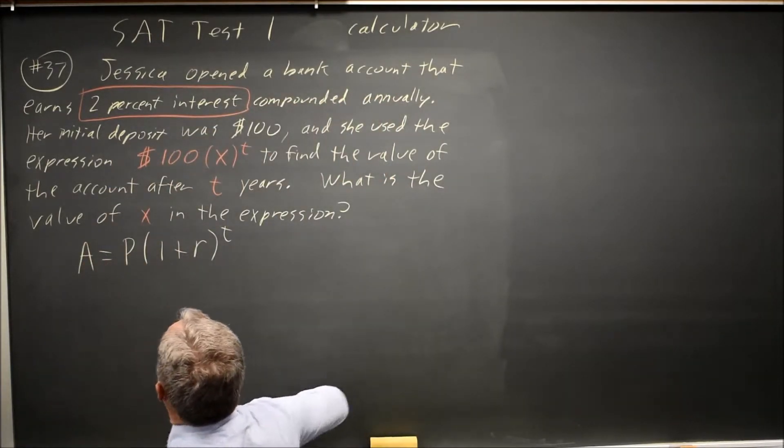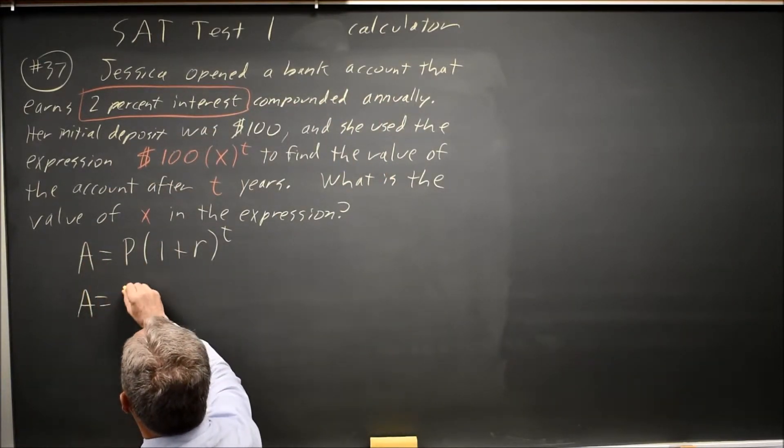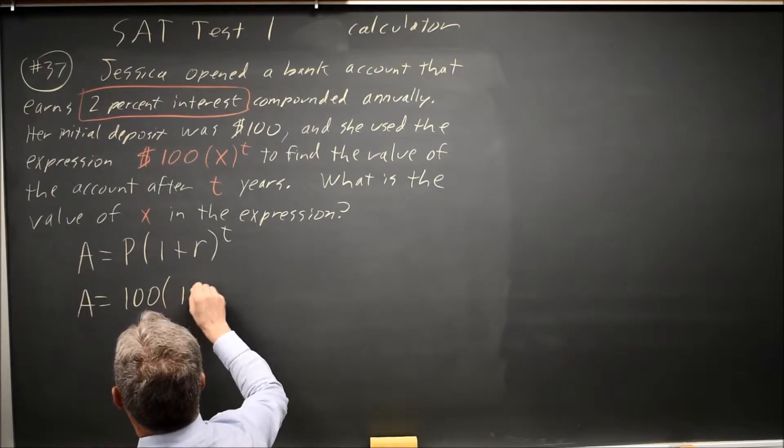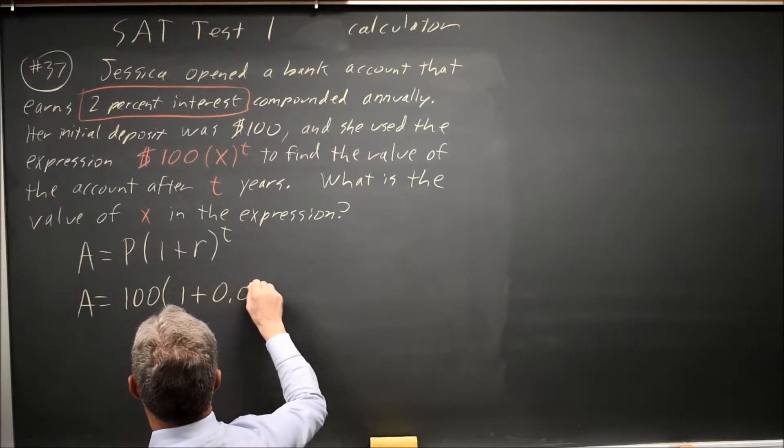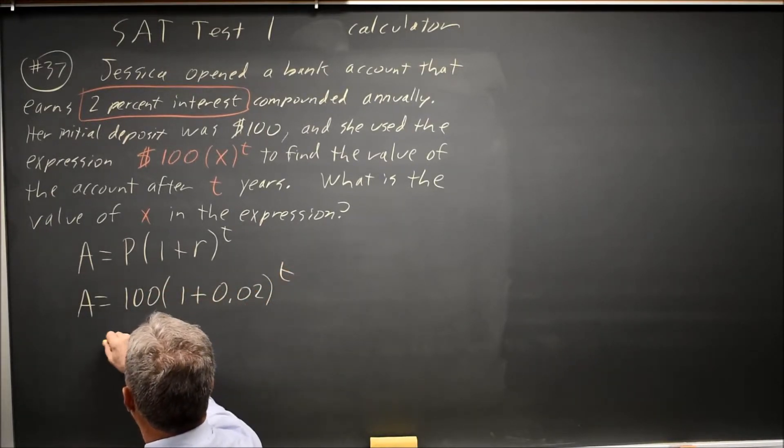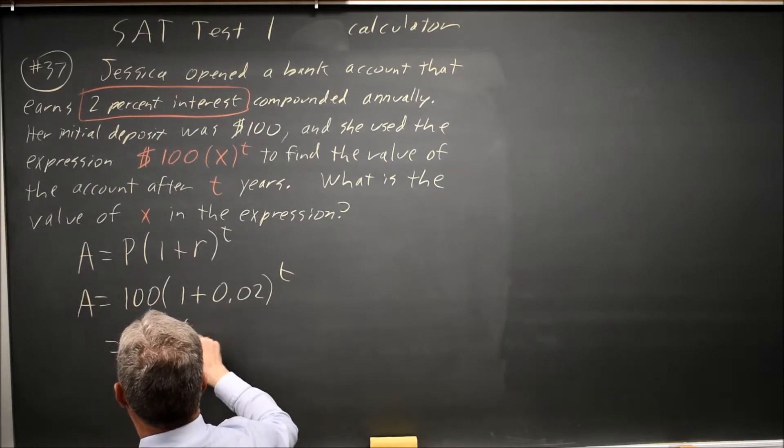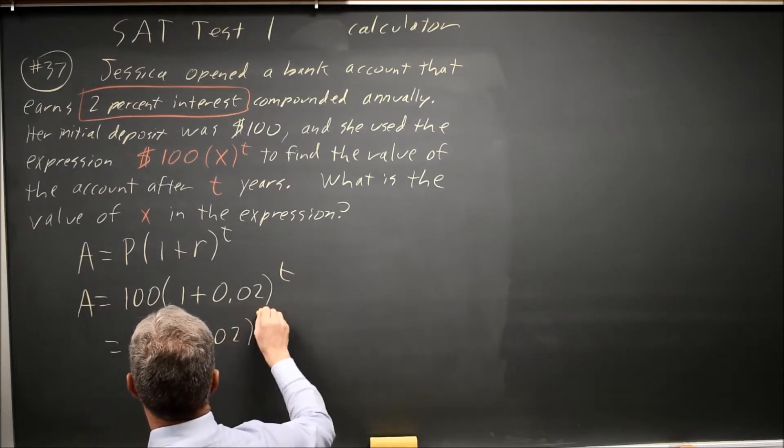In this case, your amount is your principal, which is 100, 1 plus your interest rate, which is 0.02, to the t. So that's 100 times 1.02 to the t.